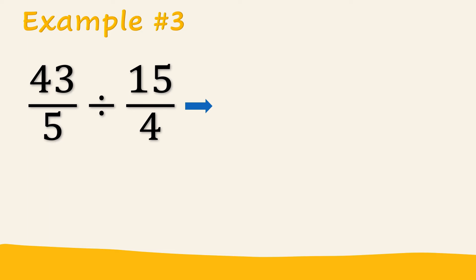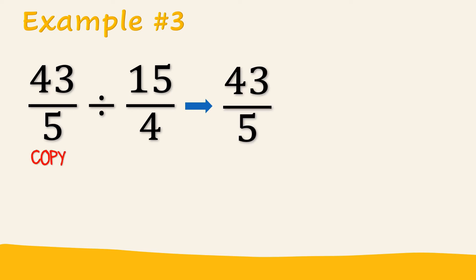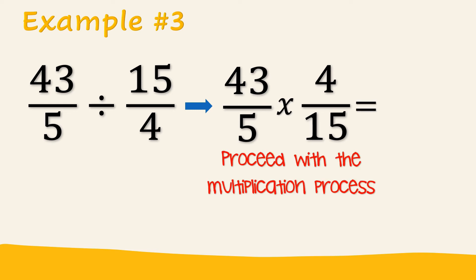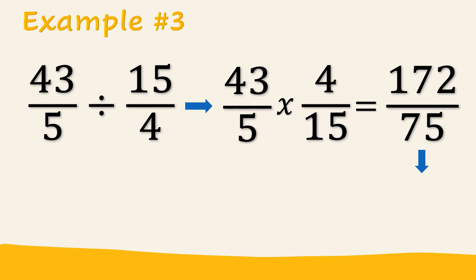Since we now have simple fractions, we can apply the process of dividing simple fractions: copy the first fraction, change the division symbol to multiplication, and get the reciprocal of the second fraction. So that will be 43 over 5 times 4 over 15. Then proceed with the multiplication process. 43 times 4, and 5 times 15, will give us an answer of 172 over 75.